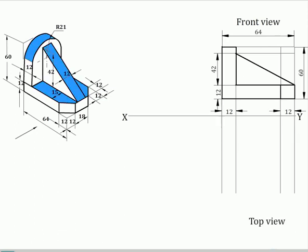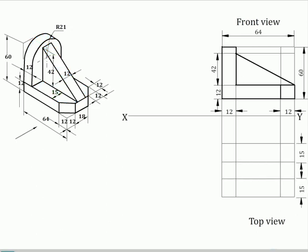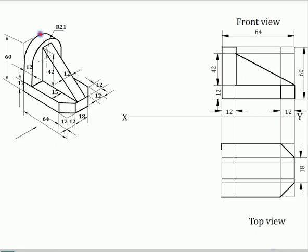Now to draw the top view, draw the projectors from the various corners vertically downwards and complete the top view. The web portion will be seen as a rectangle of size 52mm by 12mm.